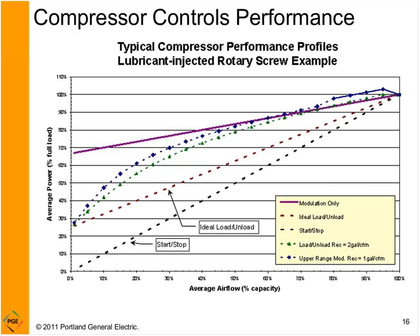A hybrid approach combines upper-range modulation with blow-down: I throttle back to a certain point, reach a pressure, then blow down. This yields a better average curve. The no-load power, when fully unloaded and just idling, can vary between 15% and 30% depending on the manufacturer. Some compressors maintain sump pressure, which keeps the power a little higher.